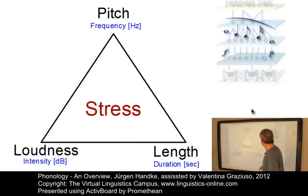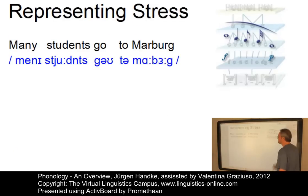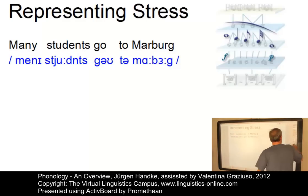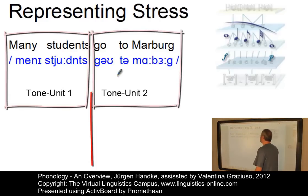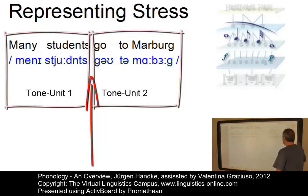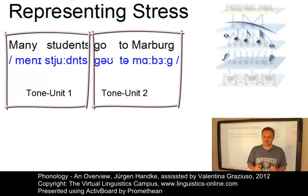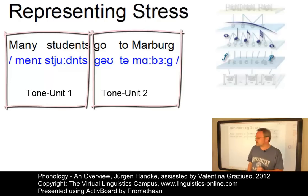Let's look at an example. Here we have the sentence: 'Many students go to Marburg.' You will probably agree that this utterance consists of two tone units whose terminal juncture is here. Within each tone unit we find at least one syllable — the so-called nucleus — which is more prominent than the others, that is, it carries more stress.